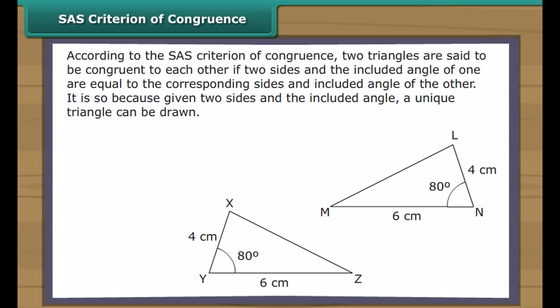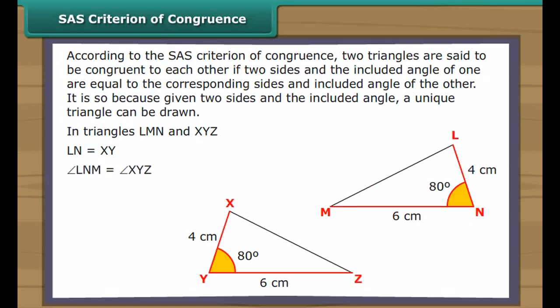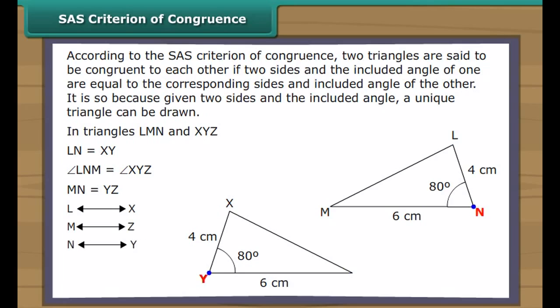SAS criterion of congruence: according to the SAS criterion, two triangles are said to be congruent to each other if two sides and the included angle of one are equal to the corresponding two sides and included angle of the other. This is because given two sides and the included angle, a unique triangle can be drawn. In triangles LMN and XYZ: side LM equals side XY, angle LMN equals angle XYZ, side MN equals side YZ. Therefore, triangle LMN is congruent to triangle XYZ.